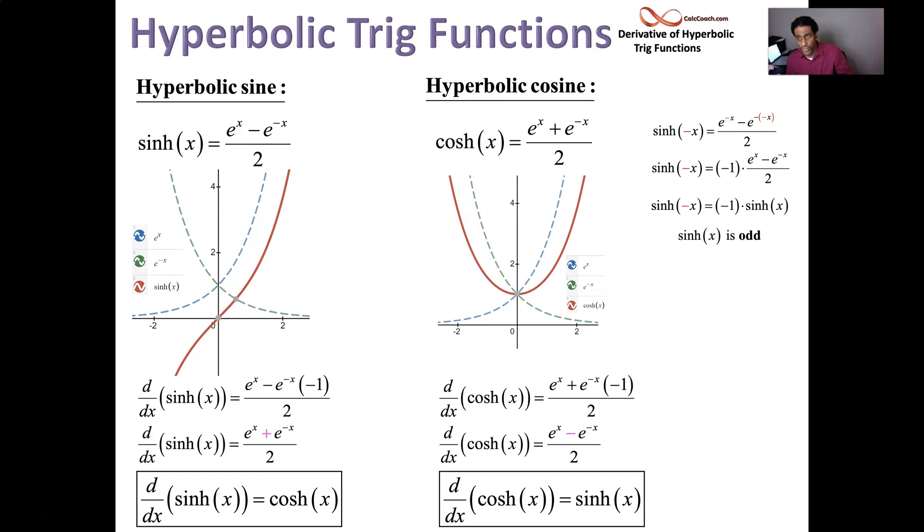And when you try that same thing for hyperbolic cosine, it doesn't change it at all. You end up with the exact same function. That's called being even.